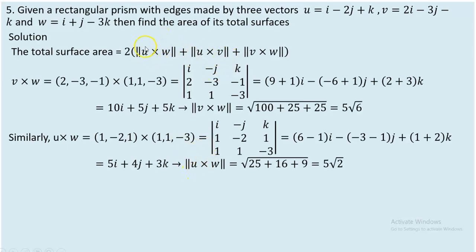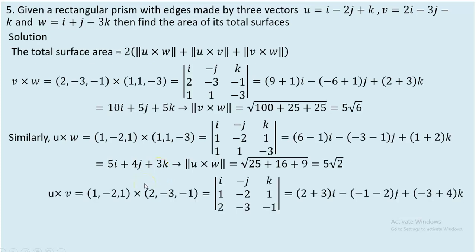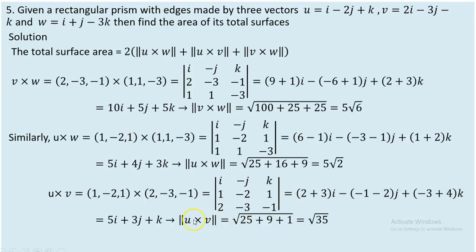Now let's calculate the norm of U cross V. Applying the same procedure, U cross V gives the vector 5i + 3j + k. The norm is √(25 + 9 + 1) = √35. So we now have our three outputs: 5√6, 5√2, and √35.